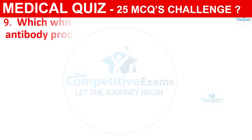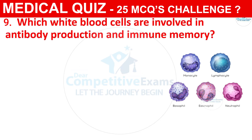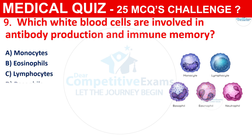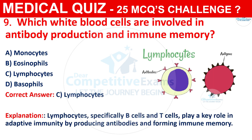Question 9: Which white blood cells are involved in antibody production and immune memory? The options are Monocytes, Eosinophils, Lymphocytes, and Basophils. The correct answer is C, i.e., Lymphocytes. Lymphocytes, especially B cells and T cells, play a key role in adaptive immunity by producing antibodies and forming immune memory.